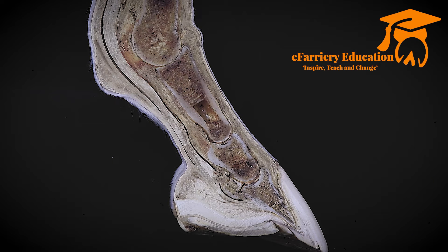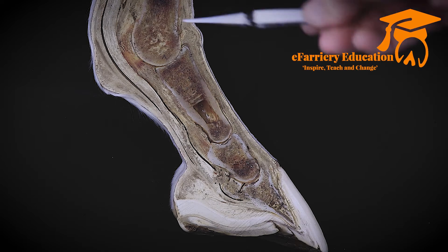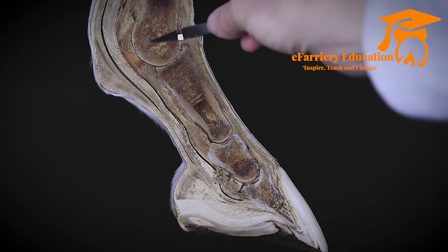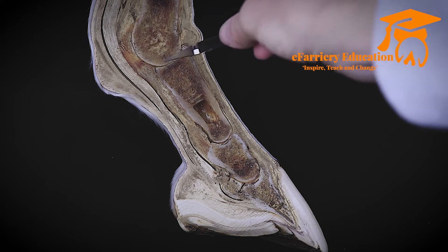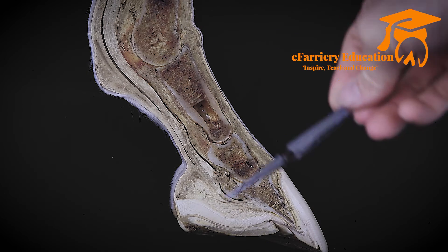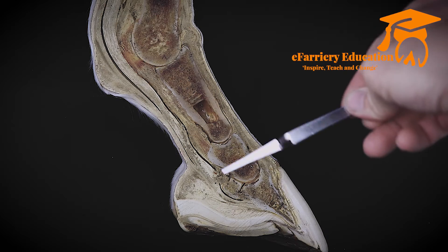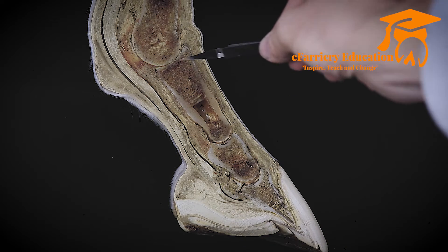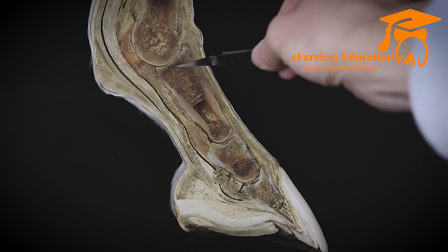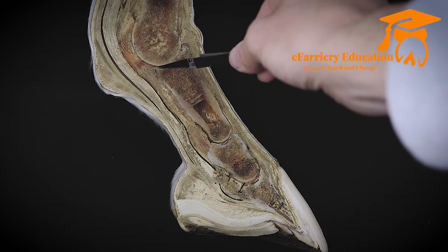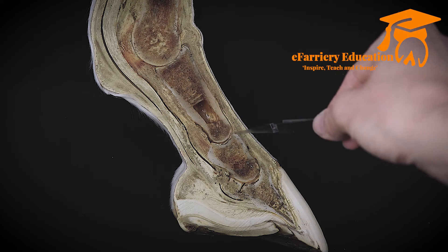First off we're going to be looking at the bones that make up the actual digit. The digit is everything from the fetlock down, similar to our hands, fingers, or digits — and it's the same for the horse. Here we have the distal extremity of the third metacarpal bone, also known as our cannon bone, and that comes down and forms part of the fetlock joint. This distal extremity, or condyle, articulates with the articular surface of the proximal phalanx.